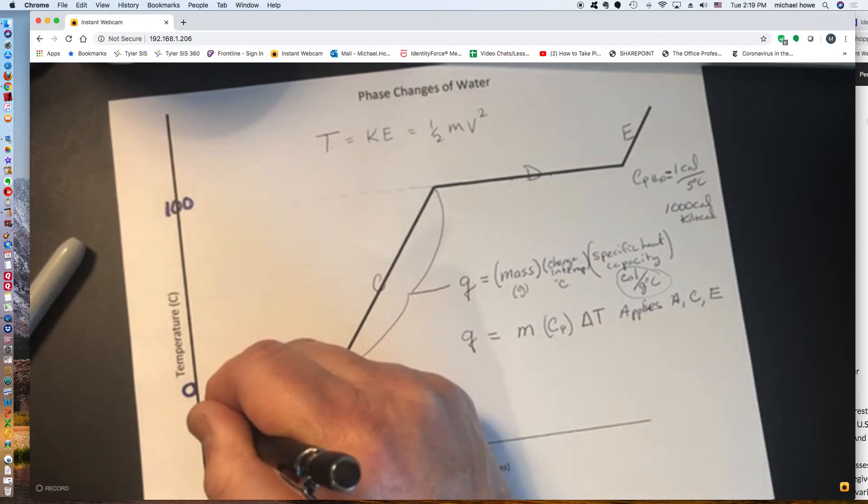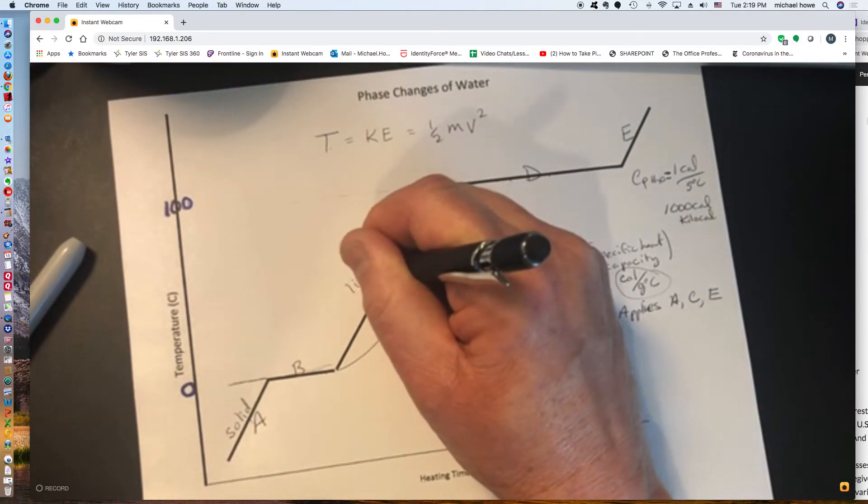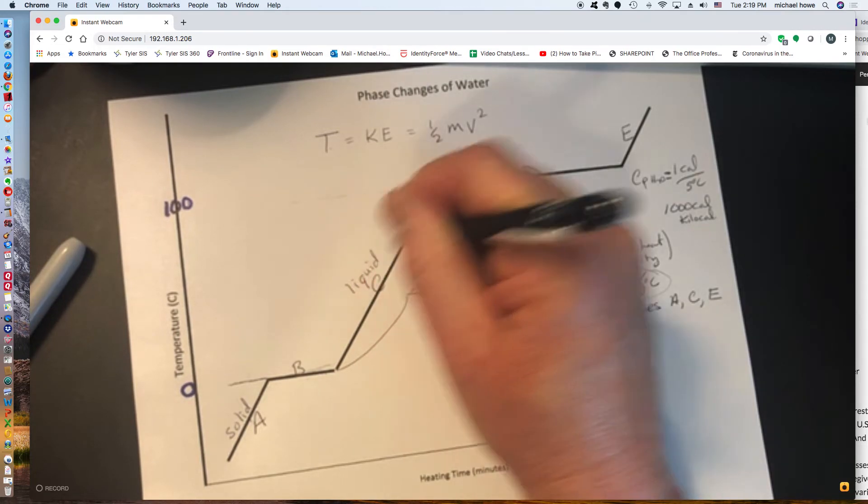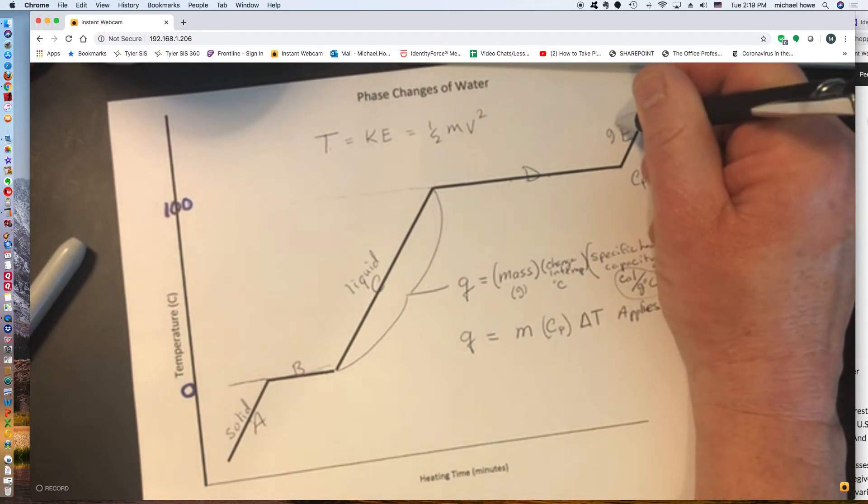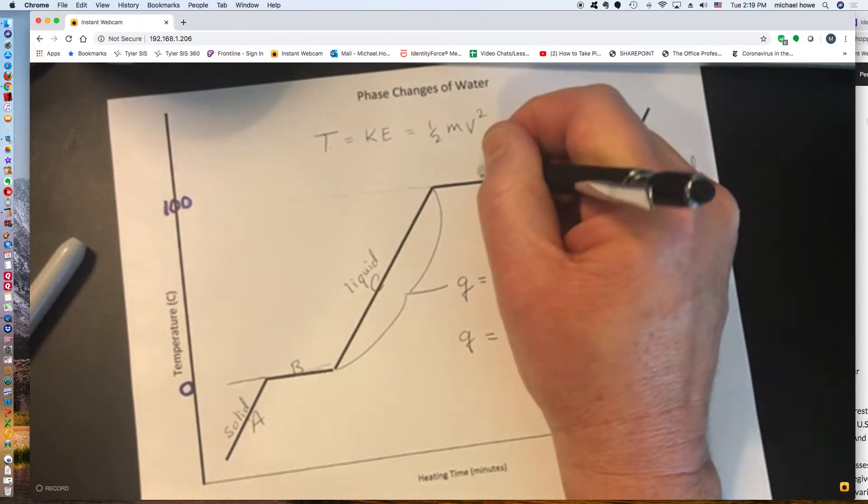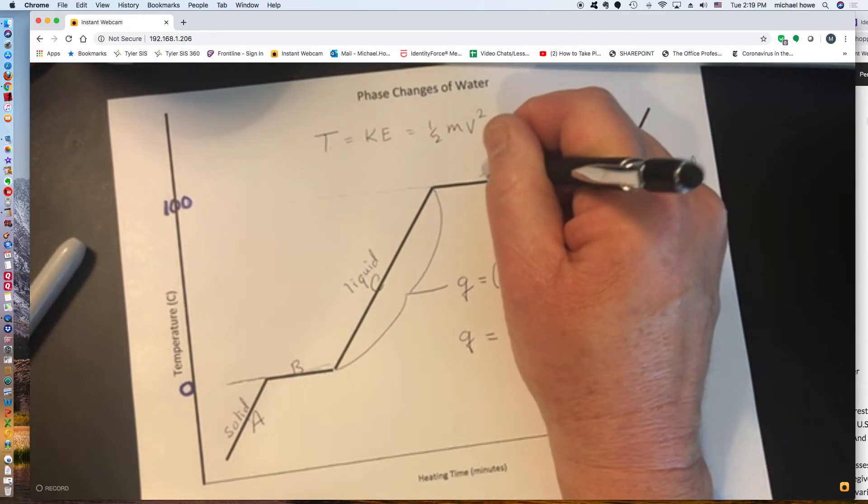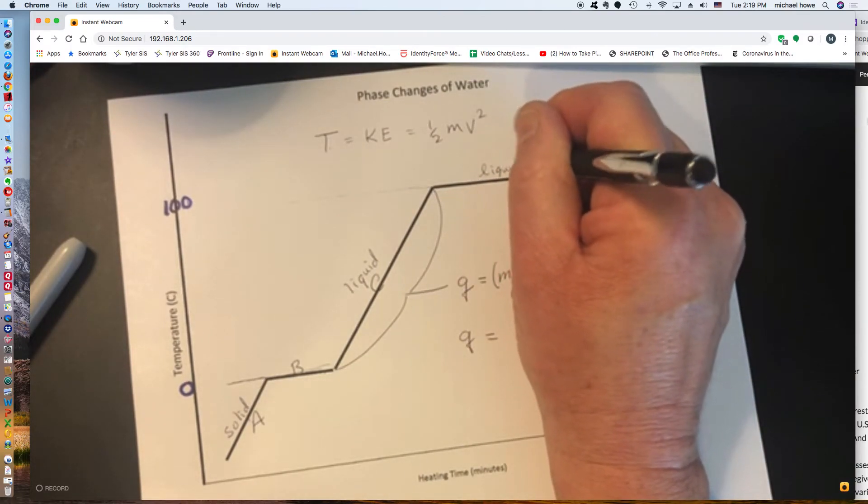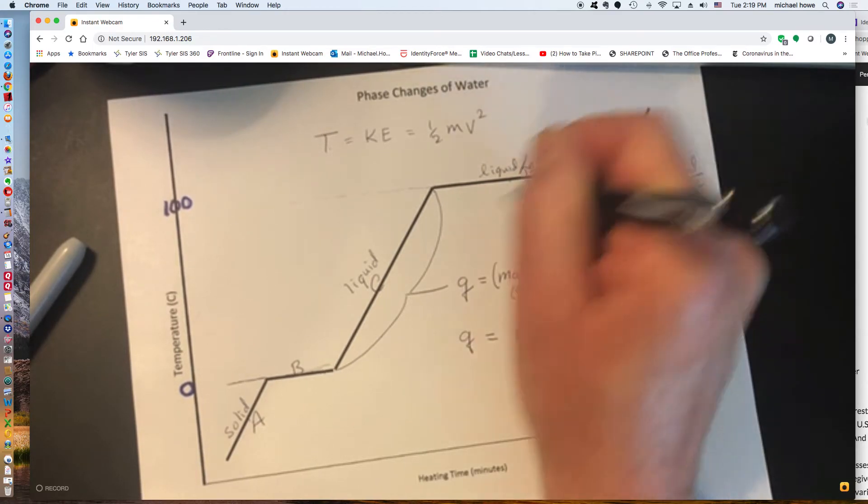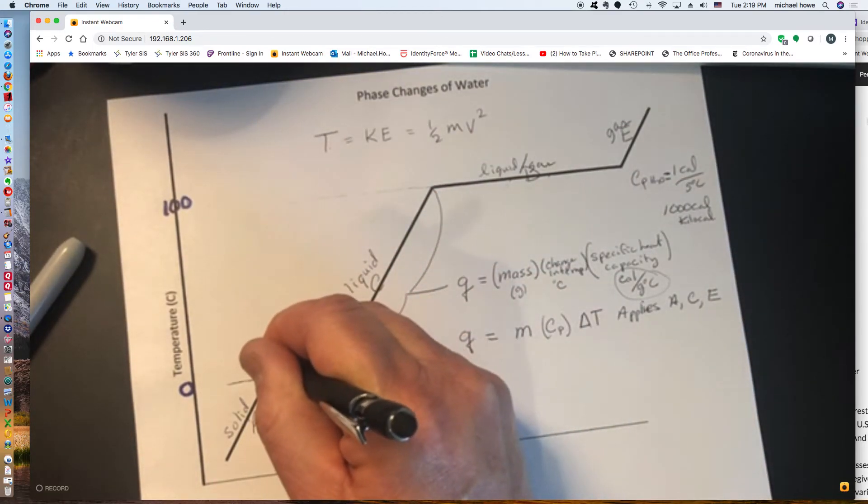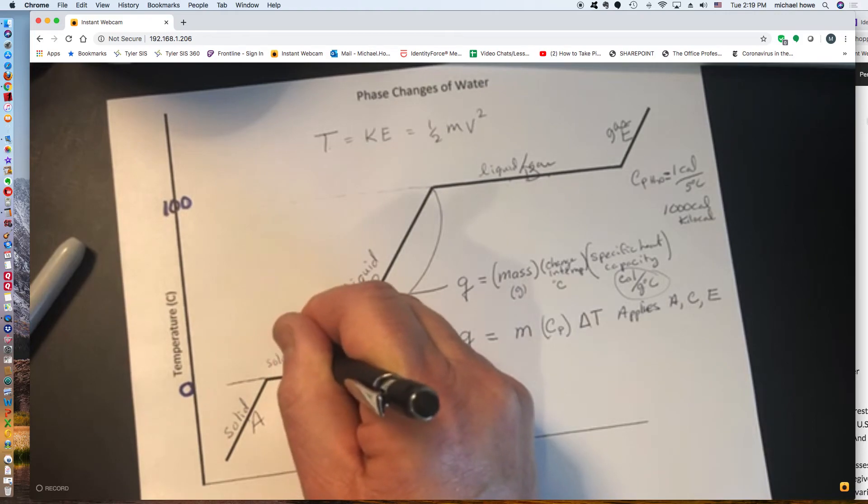All right, so going back to the graph, this area of the graph is solid. This area of the graph is liquid. This area of the graph is gas. In this area you've got a mix of liquid and gas, and in this area you've got a mix of solid and liquid.